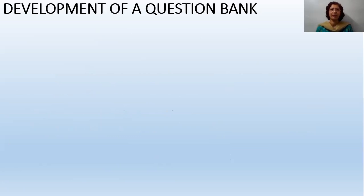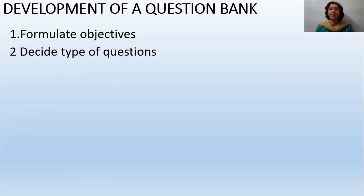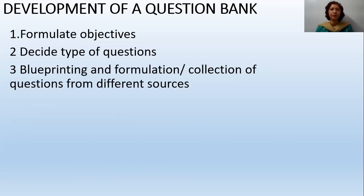How does the question bank develop? The first step is to formulate objectives — we need to formulate what our goals or objectives are for the test items. After that, we decide what type of questions to include: short answer type, very short answer type, long answer type, and if there are objective type questions — multiple choice, fill in the blanks. Then a blueprint or action plan is made, and according to the action plan the question bank is formulated.